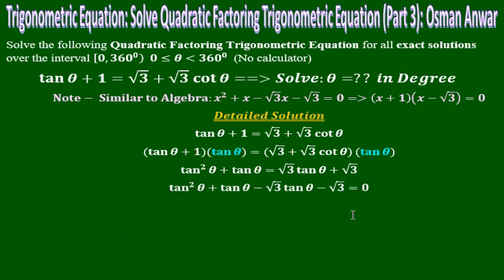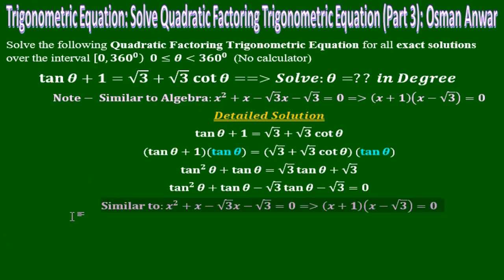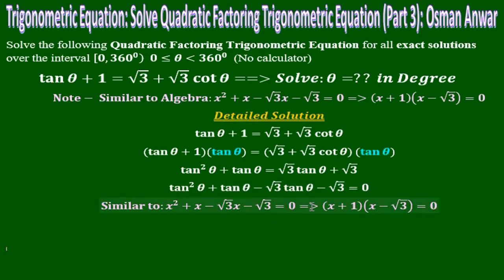Transfer everything to the left side, giving tan²θ + tan θ − √3·tan θ − √3 = 0. This is similar to x² + x − √3·x − √3 = 0, which factors as (x + 1)(x − √3) = 0, and we'll see how.